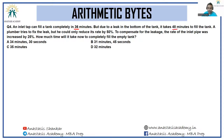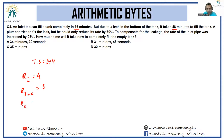Taking the tank size as LCM of 36 and 48, that is 144. Rate for inlet equals 144/36 = 4. Rate of inlet plus outlet together equals 3, so the rate of the outlet (leak) is minus 1.